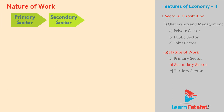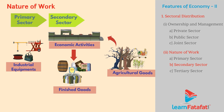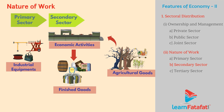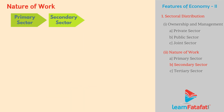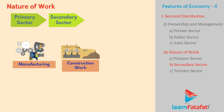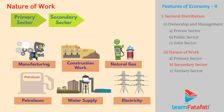Secondary Sector: Economic activities where industrial equipment is used to transform agricultural goods into finished goods are grouped in the secondary sector. Since most of the processing takes place in industries, this sector is also called the industrial sector. This sector includes occupations such as manufacturing, construction work, natural gas and petroleum, water supply, electricity, etc.